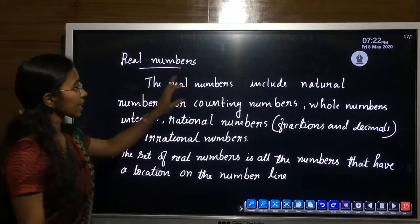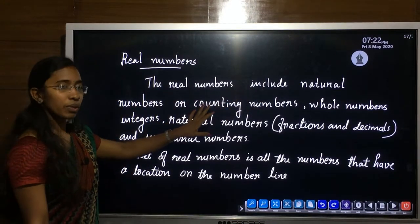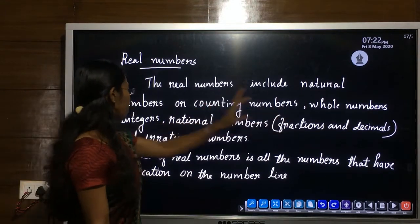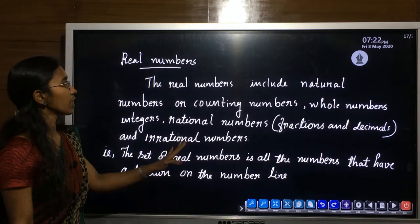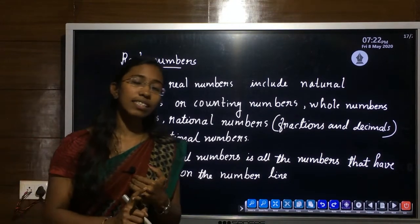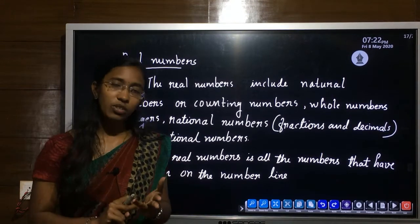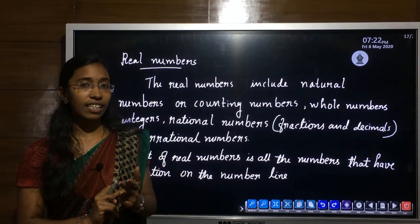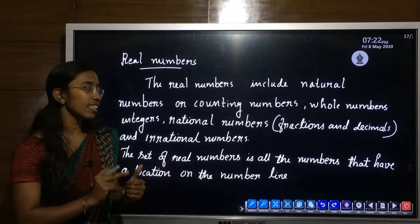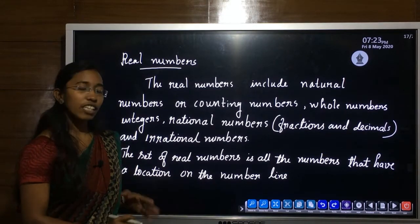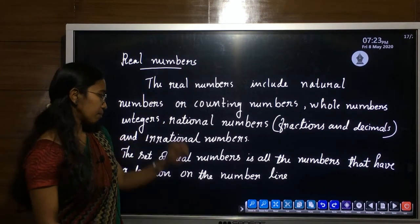Next is real numbers — that is a very important one. Real numbers include natural numbers (or counting numbers — both are the same), whole numbers, integers, rational numbers, and irrational numbers, which means real numbers are the collection of all numbers.